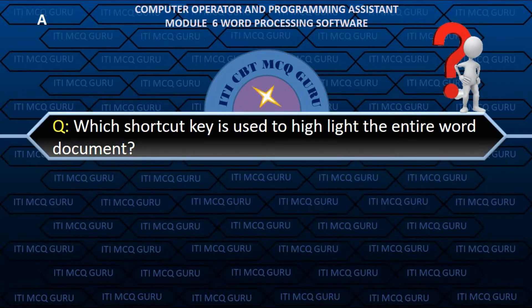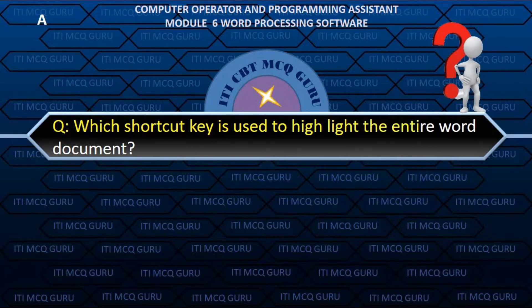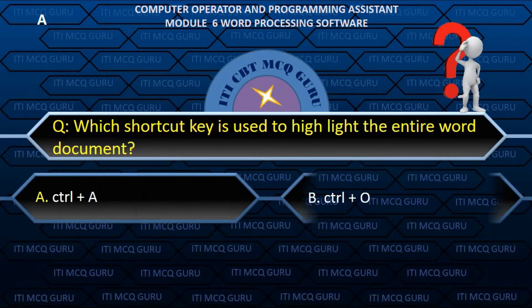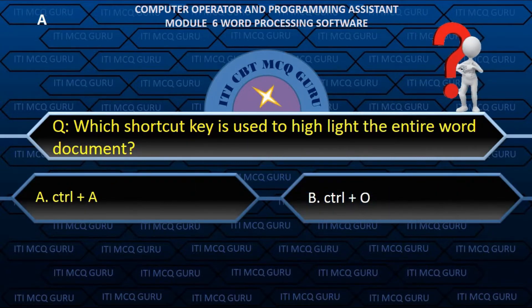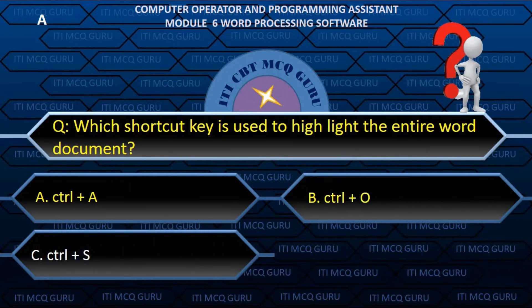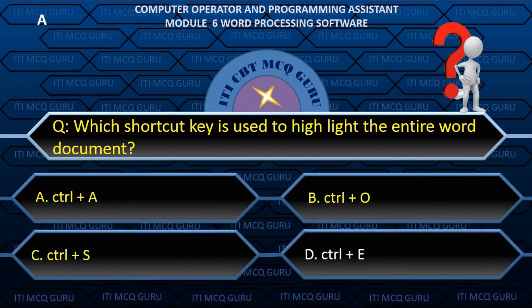Which shortcut key is used to highlight the entire Word document? A. Control plus A.